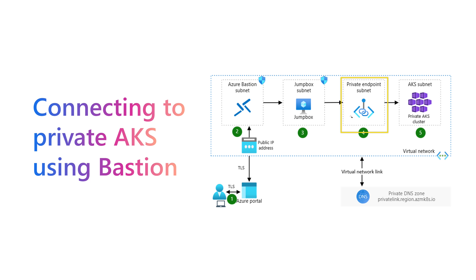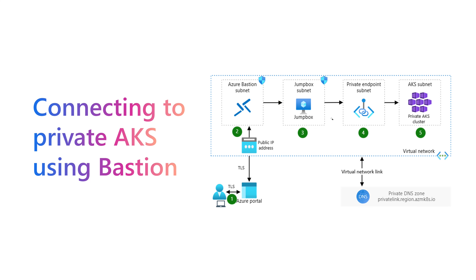The only way to access that AKS cluster is through the private endpoint, which means I need to use a machine inside the virtual network or inside the perimeter of the network of the AKS cluster. The typical solution to achieve this is by creating a virtual machine that will act as a jump box inside the virtual network of the cluster.